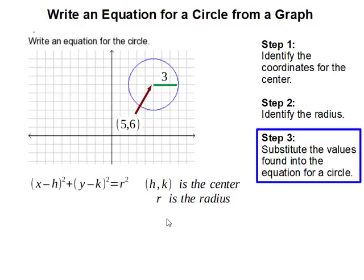(h,k) is the center and r is the radius. Our final step is to simplify. Our equation for a circle from this graph is given here, and this completes our problem.